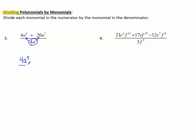4a⁵ divided by 4a⁵ plus 20a⁷ divided by 4a⁵. So how do we simplify this?